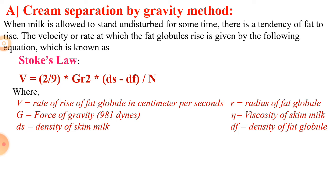From Stokes' law, it can be observed that theoretically velocity is increased by three factors: first, an increase in the radius of fat globules; second, an increase in the difference in densities of skim milk and fat; and third, a decrease in the viscosity of skim milk. Because of these three factors, velocity is increased.